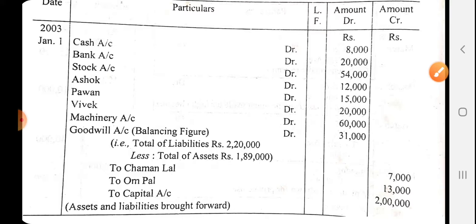In today's video we discussed these topics. We started from the basics, discussed traditional and modern rules of accounting, journalizing, different types of discount — cash discount and trade discount — how journal entries are recorded, compound journal entries, and today we discussed opening entry. In the next video, a new topic related to journal entries will be presented. If you have any doubts or suggestions, please ask in the workshop group or during online classes. Thank you.